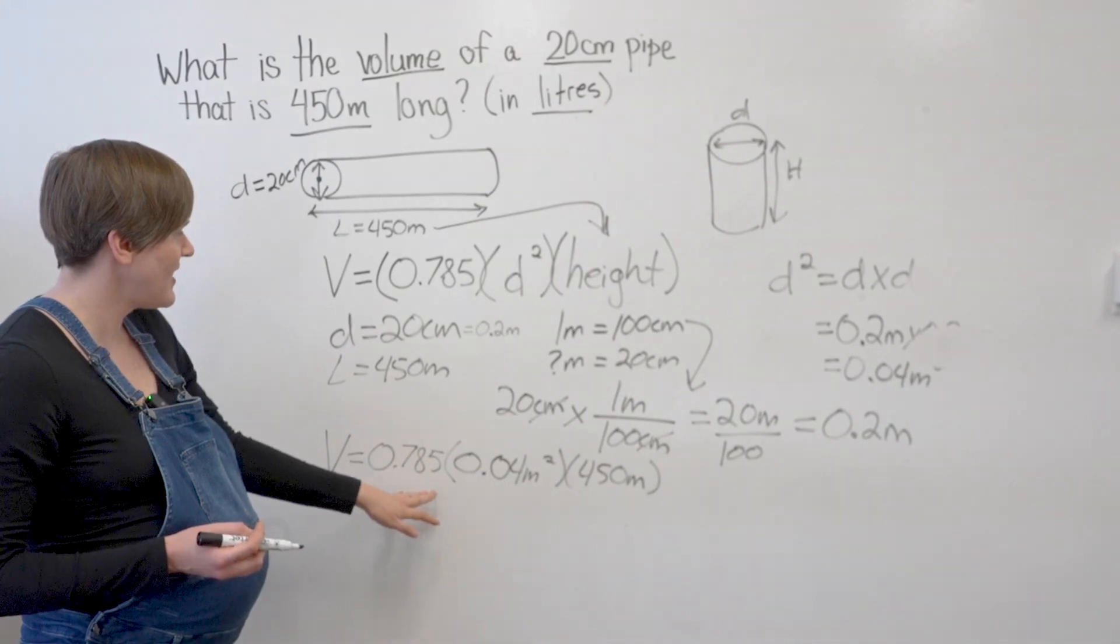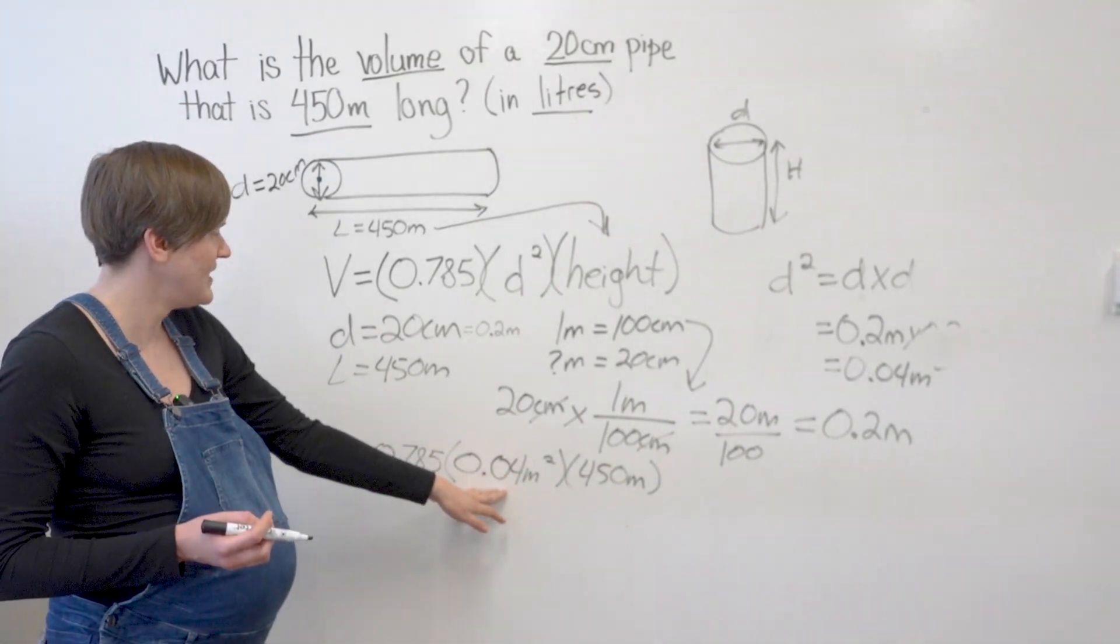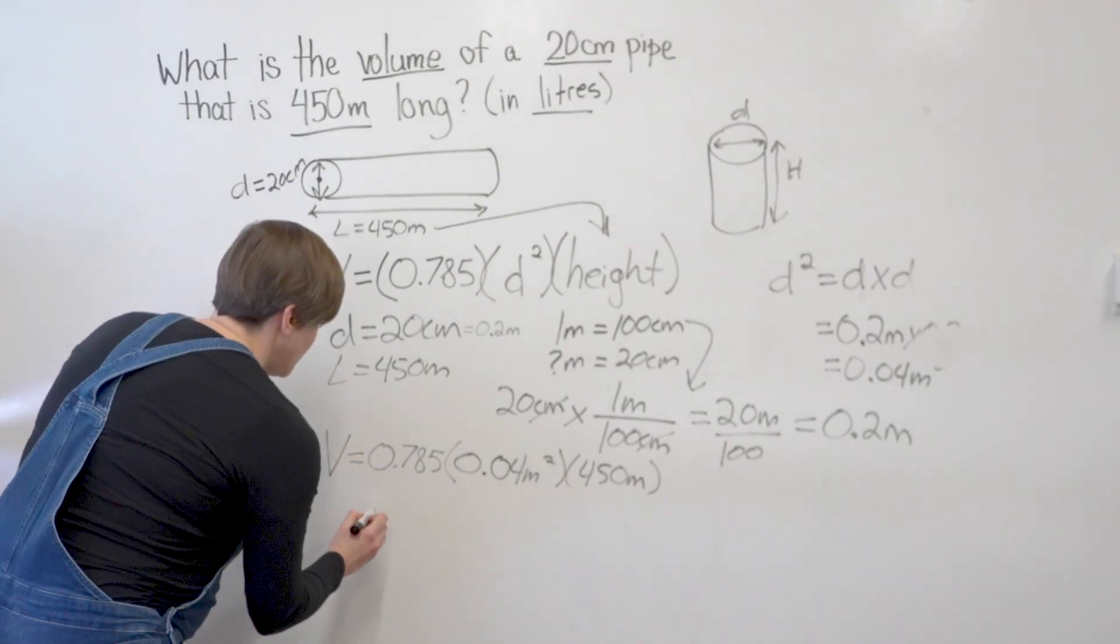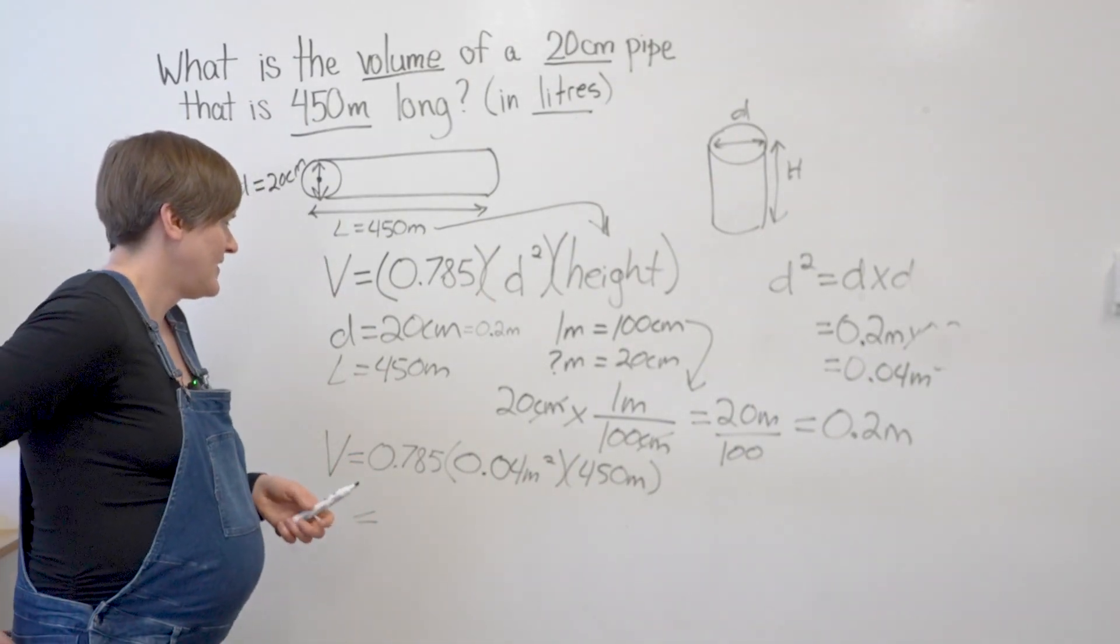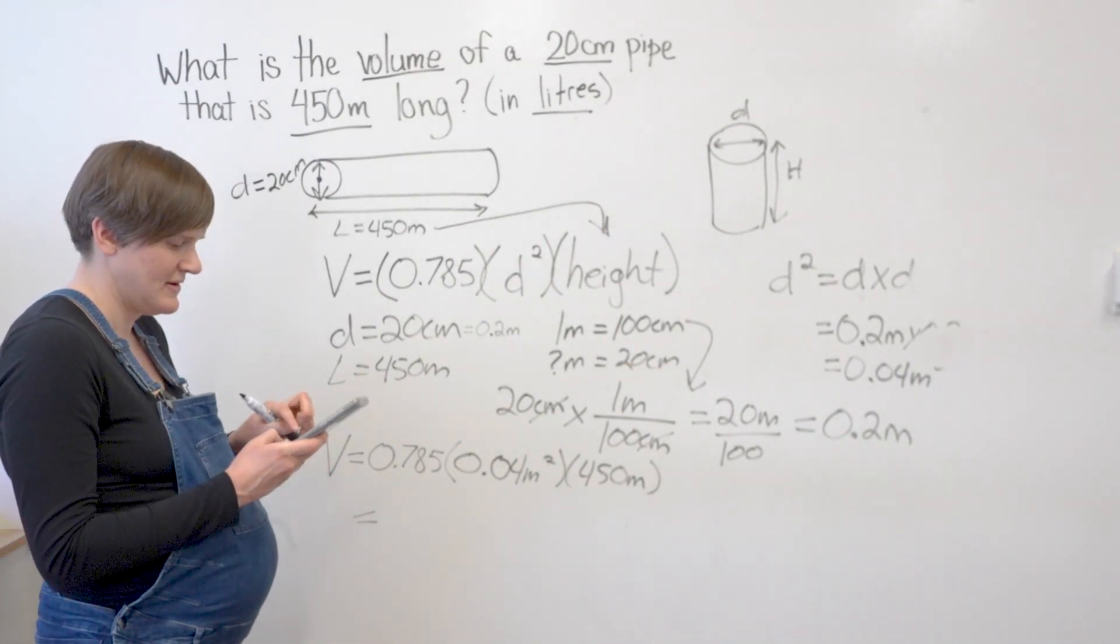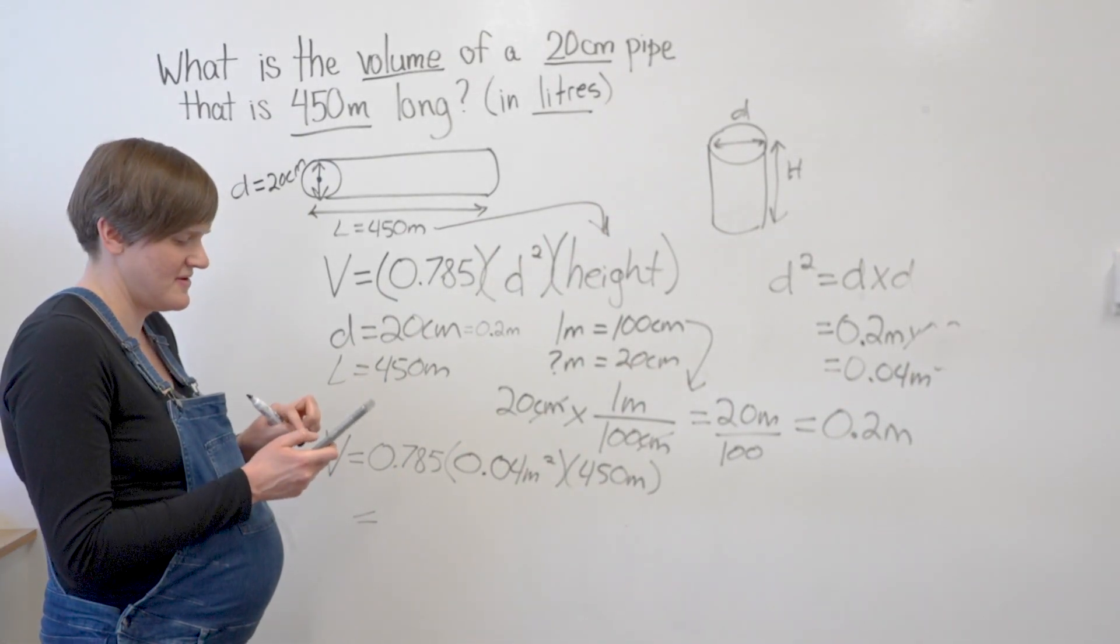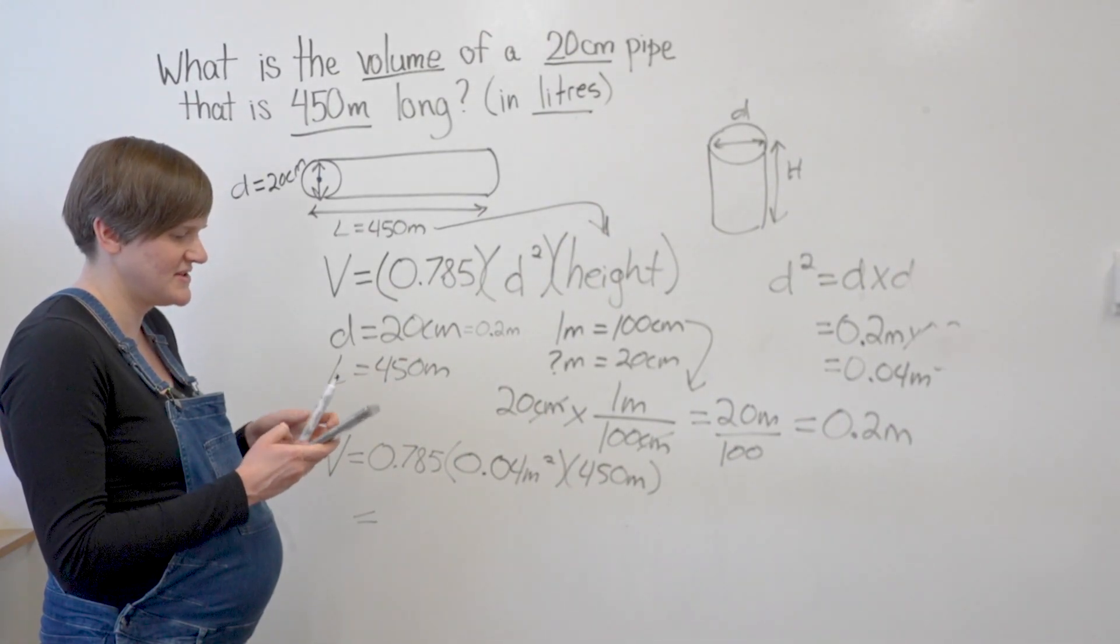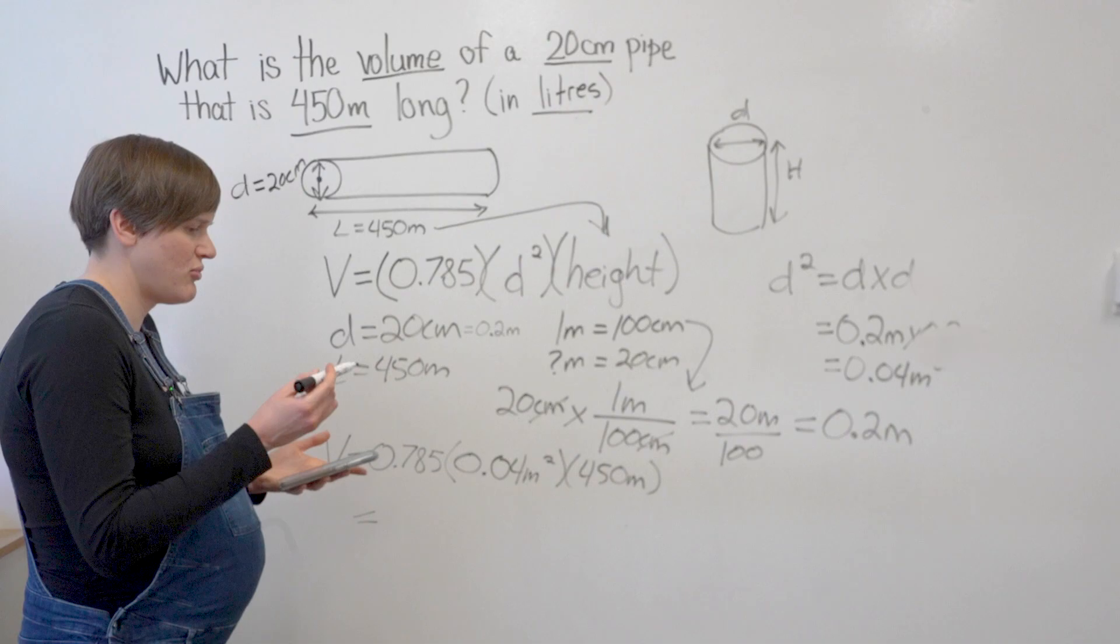So here I'm going to go 0.785 times 0.04 times 450 meters. Again, I'm going to use my calculator for that. 0.785 times 0.04 times 450 meters. And I get 14.13.